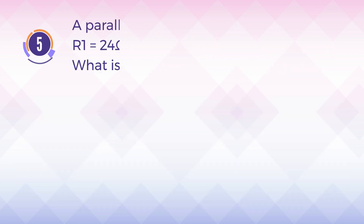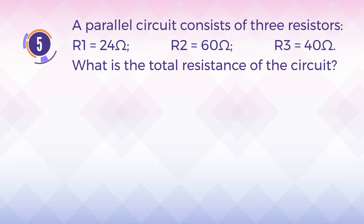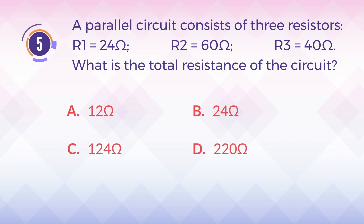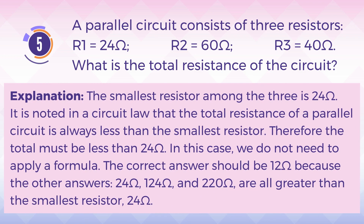Number five: a parallel circuit consists of three resistors — resistance 1 is 24 ohms, resistance 2 is 60 ohms, resistance 3 is 40 ohms. What is the total resistance of the circuit? A) 12 ohms, B) 24 ohms, C) 124 ohms, D) 220 ohms. The correct answer is A) 12 ohms.